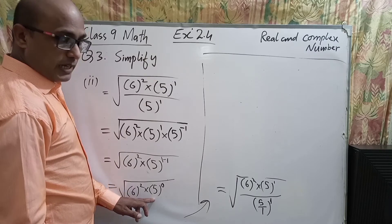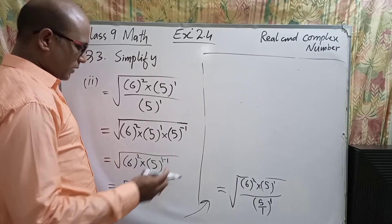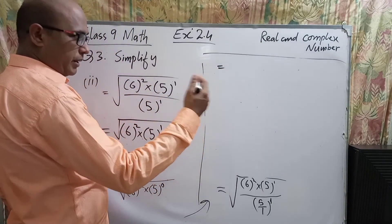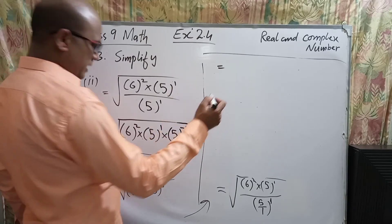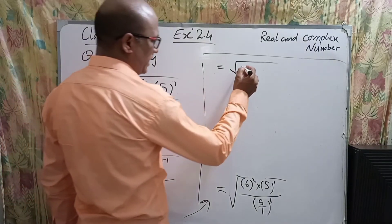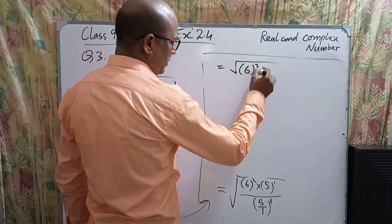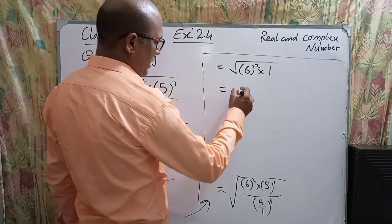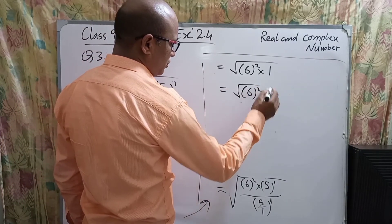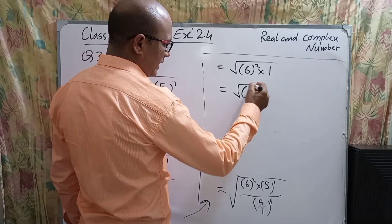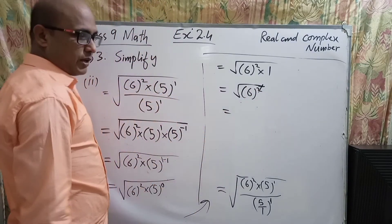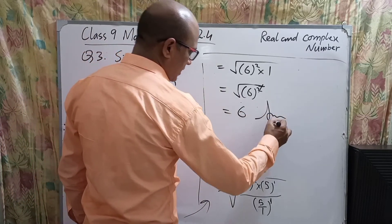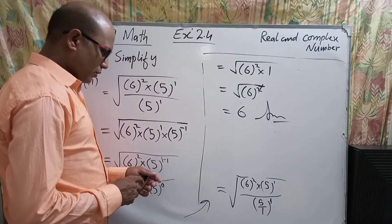Any number, whether bigger or smaller, with 0 power equals 1. So 6 power 2 remains the same and in place of 5 power 0 we write 1. We are left with only 6 power 2, and the square root of 6 squared cancels the square, giving us 6 as the final answer.